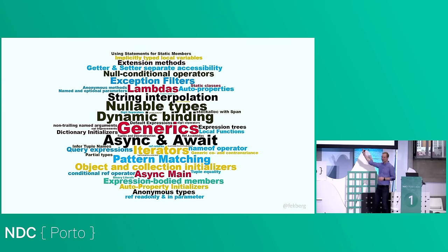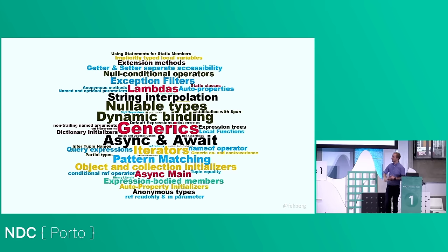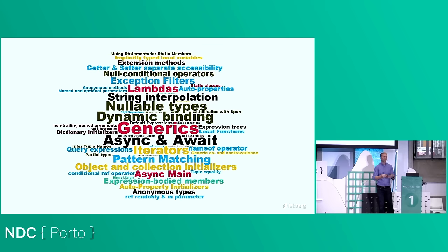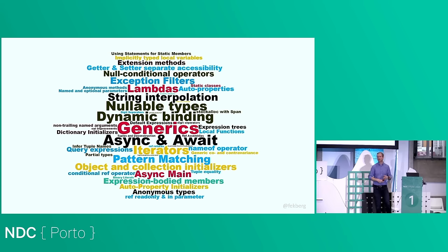We're going to be discussing quite a lot of the language features of C# and what's coming in .NET. This tag cloud shows what's happened to C# over the past decade. We're not going to go through each feature, but it illustrates that the language keeps evolving, which means the framework — or .NET — also has to evolve. The runtime keeps adapting to new features, and we also get support for mobile development, Blazor, and ASP.NET Core improvements.